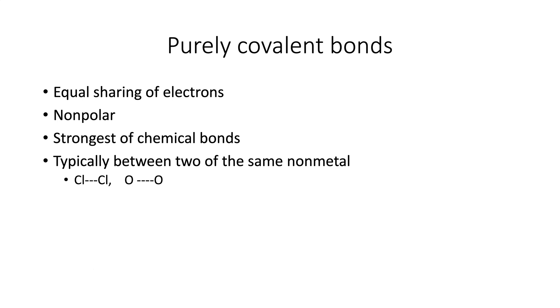The other extreme, the strongest of chemical bonds, are purely covalent. A purely covalent bond has equal sharing of electrons, and we'll talk about that in a moment. They are nonpolar, they're typically between two of the same nonmetal. So chlorine-chlorine, oxygen-oxygen, hydrogen-hydrogen, something like that.